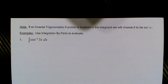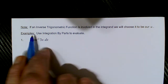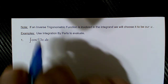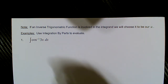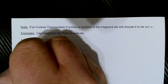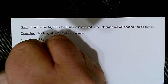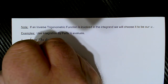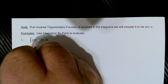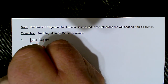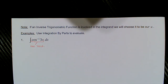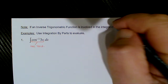Hello everyone, this is Topics 8 and 9, Part 2 for Exam 2 — specifically Topic 9, where inverse trig functions are involved. When they are, as you can see in the note here, we're going to choose the inverse trig function to be our u. Make sure you realize that when you see an inverse trig function such as the inverse cosine of 3x, the entire thing is an entity on its own.